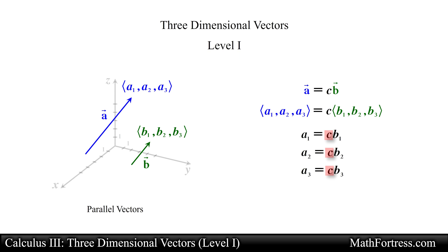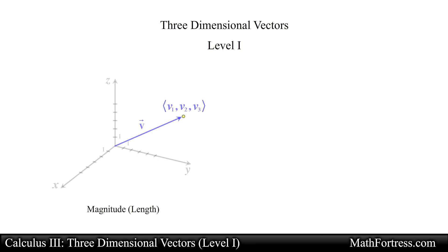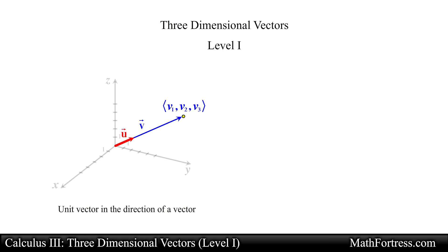The length or magnitude of a vector in space is calculated similarly to planar vectors; the only difference is that we include the third component into the expression. This is essentially the Pythagorean theorem in three dimensions. To find a unit vector in the direction of a vector v, we simply take the components of vector v and divide by the magnitude of vector v, as long as vector v is not the zero vector.